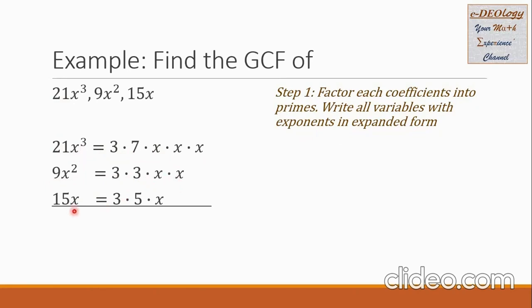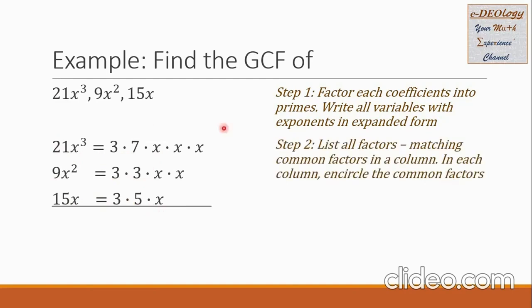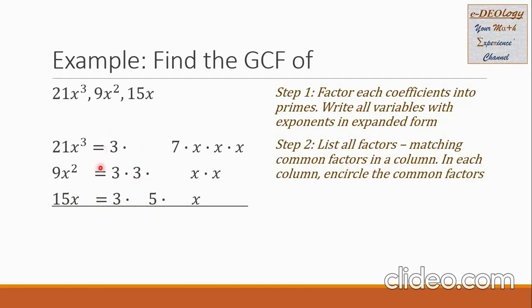For 15x, this equals 3 times 5 times x. Step 2: list all factors, matching common factors in a column. The factors are now written like this. For the common factor 3, it is written in one column.